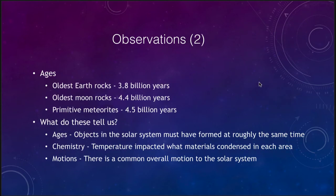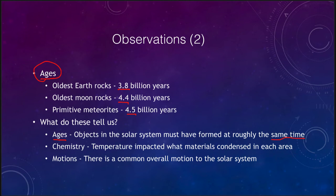We also know about the ages of objects in the solar system. Earth rocks are about 3.8 billion years old, the oldest moon rocks about 4.4 billion years old, and very primitive meteorites about 4.5 billion years old. These ages tell us that things formed at roughly the same time — the formation of the solar system did not take billions and billions of years, but happened relatively quickly, with ancient meteorites and moon rocks being very close to our estimated age for the Sun.